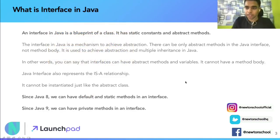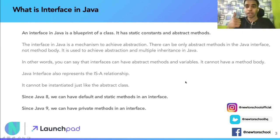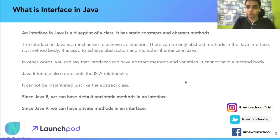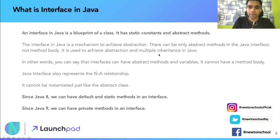Interface in Java is a mechanism to achieve abstraction. There are two methods to achieve abstraction in Java: first, using abstract classes, which may or may not give you complete abstraction; and second, interfaces, which give you complete abstraction. There can only be abstract methods in a Java interface — no method body. It is used to achieve both abstraction and multiple inheritance in Java. Interfaces can have abstract methods and variables, but cannot have a method body.